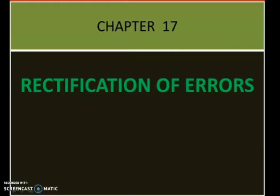In our last class, we discussed different types of errors. Errors are classified into four: error of omission, error of commission, error of principles, and compensating error. We also saw that these errors can be rectified. Today, we will discuss problems related to rectification of errors.